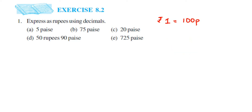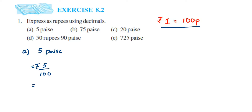The first question is 5 paise. We have to convert this into rupees. Since one rupee equals 100 paise, we divide by 100, giving us 5/100 rupees. Now, you've learned in lower classes how to convert this into a decimal — whenever you have 10, 100, 1000, or 10000 in the denominator, just count the zeros and place the decimal point from the right side.